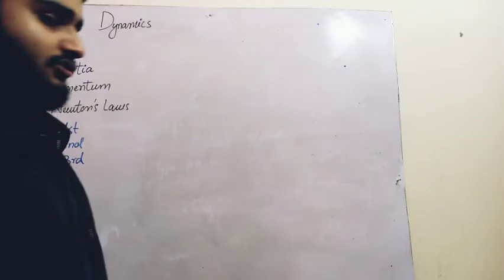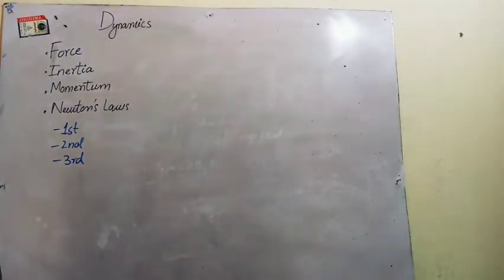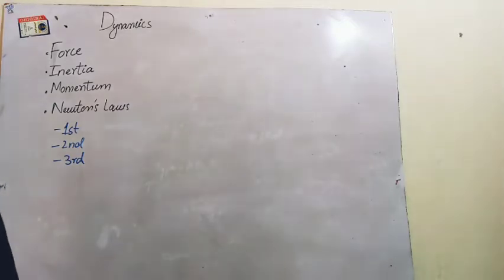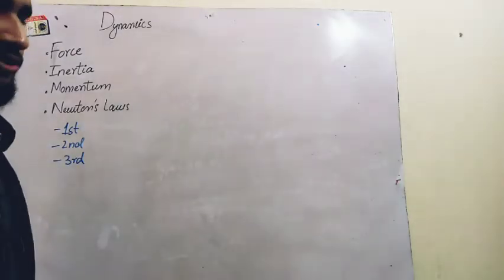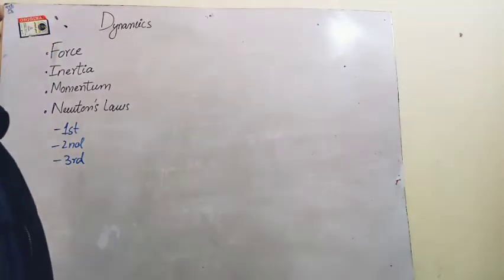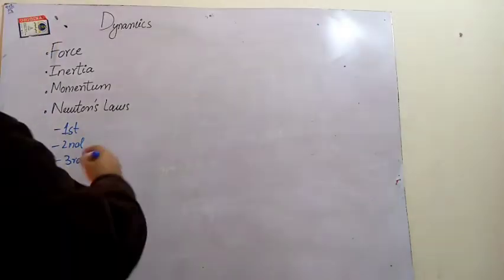First of all, we will look at the definition of dynamics — what dynamics means. Basically, dynamics is a branch of physics in which we study the motion of objects along with its causes. The last chapter we discussed was kinematics, in which we only discussed the movement of objects. Now in dynamics, we will discuss the movement of objects and also its causes.